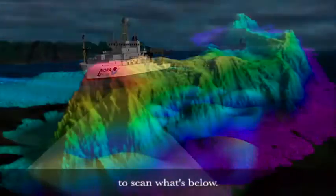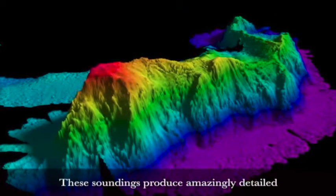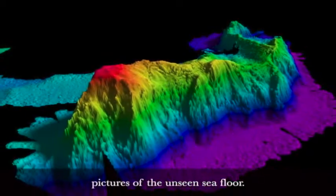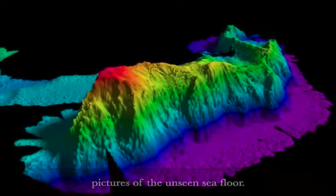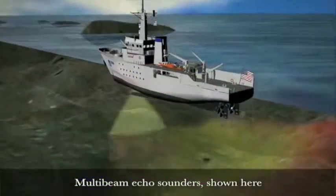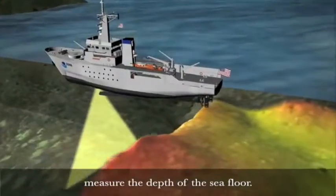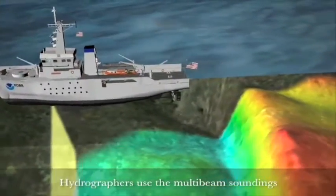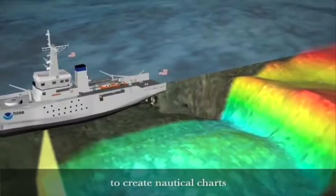These soundings produce amazingly detailed pictures of the unseen sea floor. Multi-beam echo sounders, shown here, measure the depth of the sea floor. Hydrographers use the multi-beam soundings to create nautical charts and produce colorful maps of the underwater terrain.